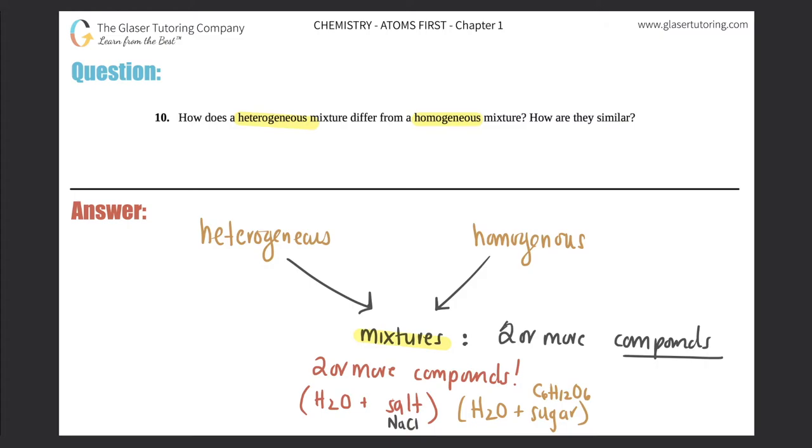So yeah, just two or more compounds that come together will make a mixture. So that's how they're similar, but now we've got to figure out how they're different. The difference comes from the way that they look. Heterogeneous is when you can see different parts. So with your eye it will be divided.